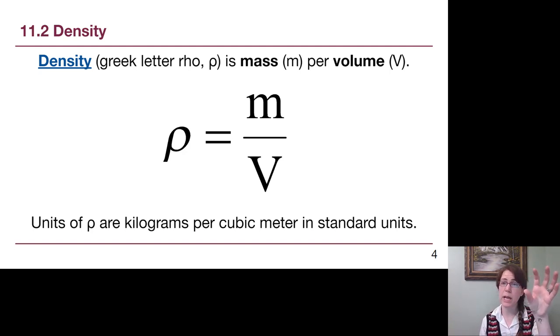Density is mass per volume, so mass on top, little m, and volume on the bottom, big V, so that we don't get it confused with velocity. The units of density are kilograms per cubic meter, because mass is in kilograms, and volume in our standard units would be cubic meters, meters times meters times meters.